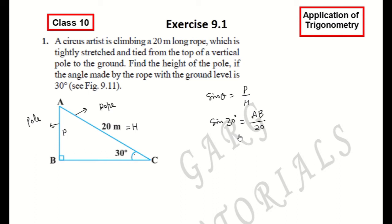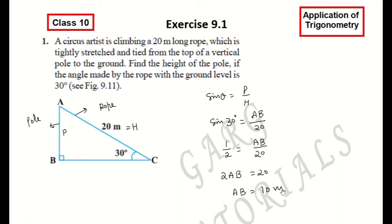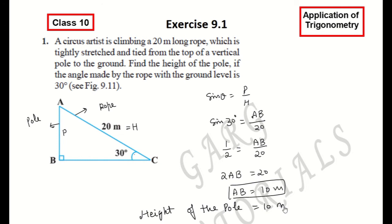The value of sin 30° is 1/2. So we get: 1/2 = AB / 20. Cross-multiplying gives 2 × AB = 20, therefore AB = 10 meters. So the height of the pole is equal to 10 meters. This is the answer.